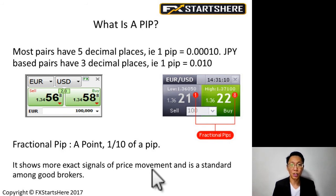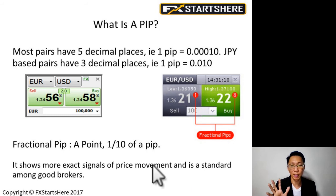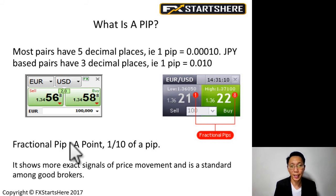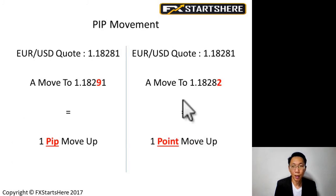Most brokers nowadays show five decimal places when you're trading. When I first started trading 12 years ago, there was no fifth decimal place — it went up to the fourth decimal only, so there was no fractional PIP back then. Only in recent years did brokers introduce the fractional PIP to make prices more accurate.